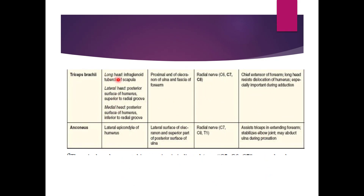Triceps has three heads: one is the long head, one is the lateral head, and one is the medial head. The long head originates from the infraglenoid tubercle of the scapula. The lateral head originates from the posterior surface of the humerus superior to the radial groove. The medial head is also on the posterior surface of the humerus, inferior to the radial groove.